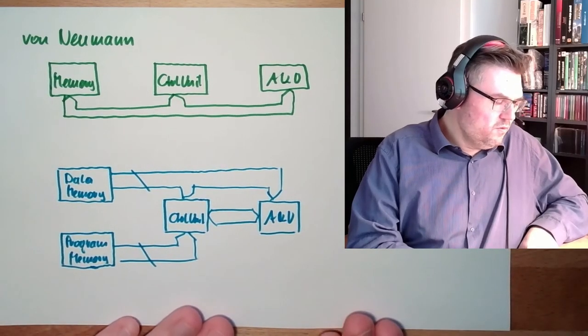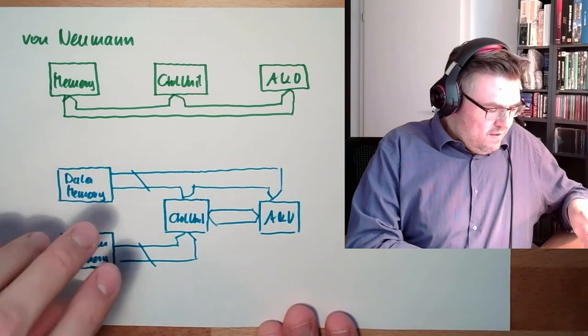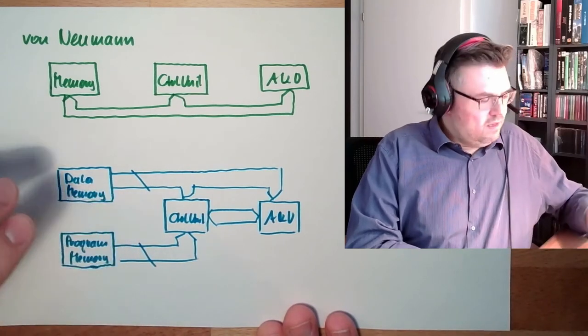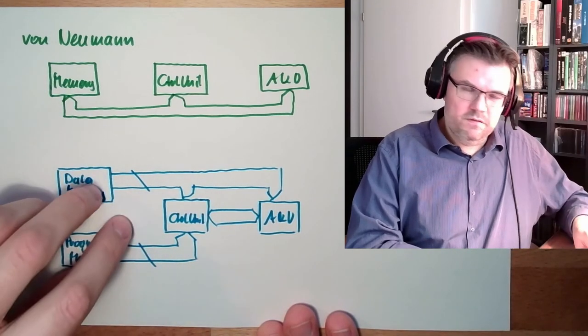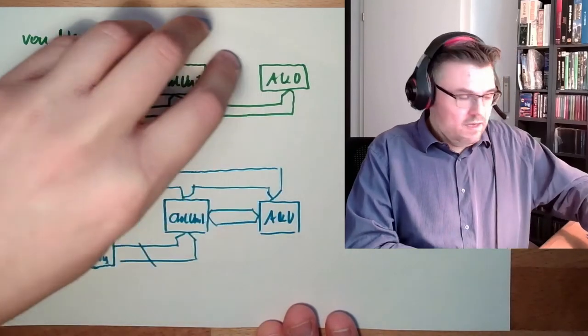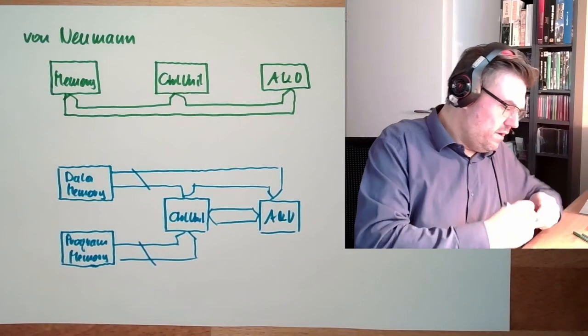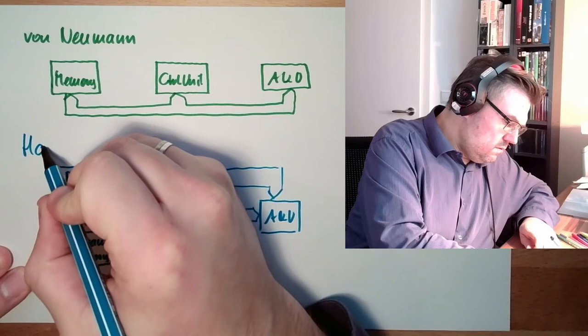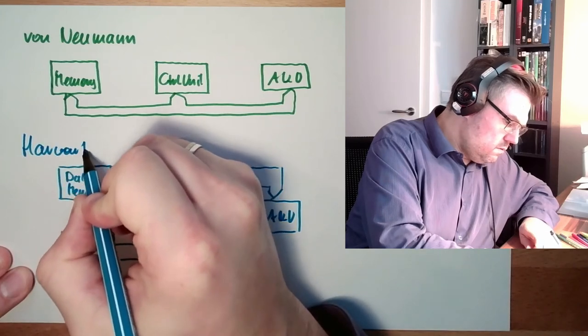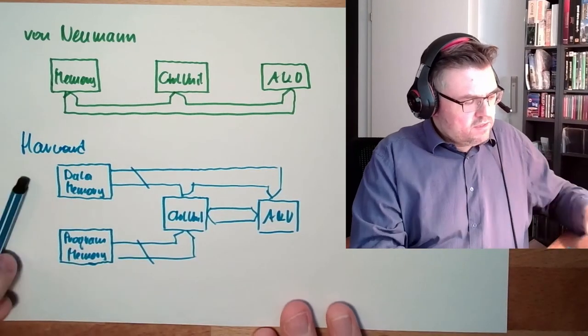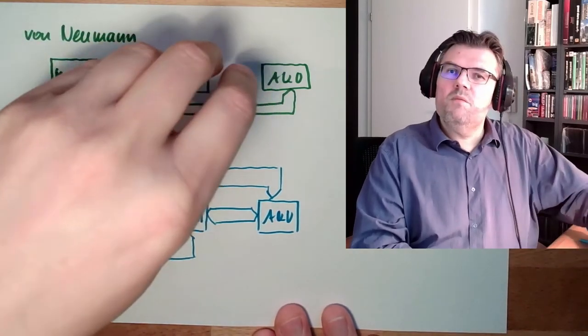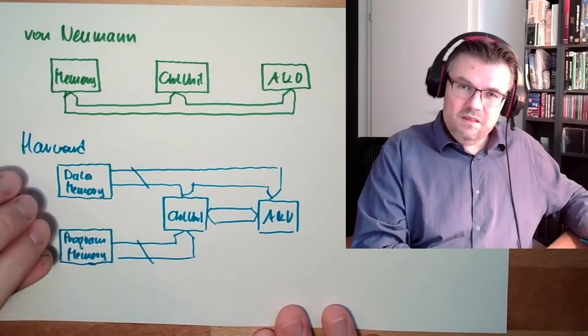So these are the two things. Modern day computers, they do use a combination of two things. Externally they still - I'll write the Harvard - it's clear externally they use the Von Neumann architecture, but internally...